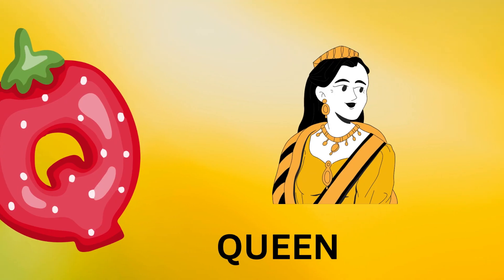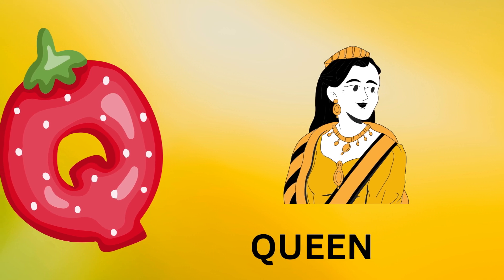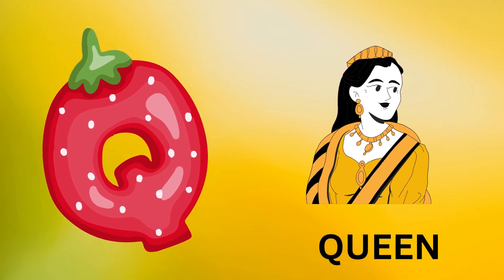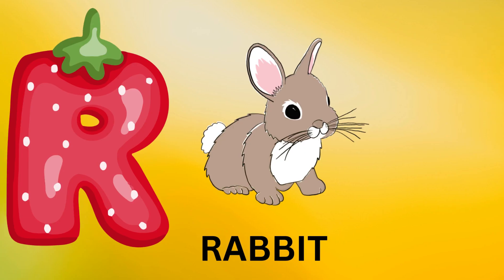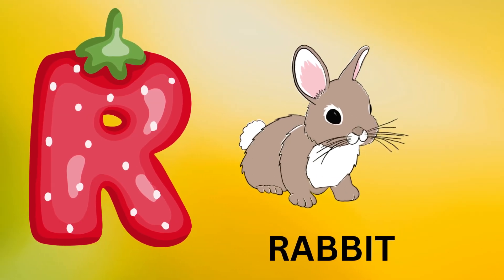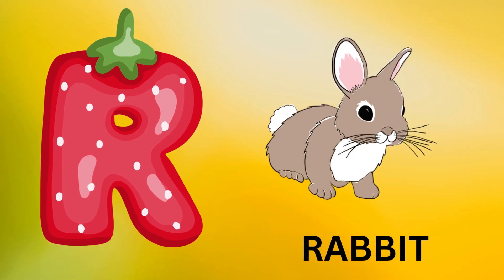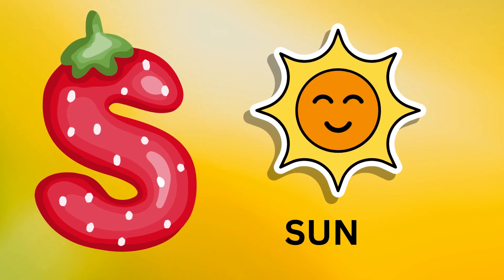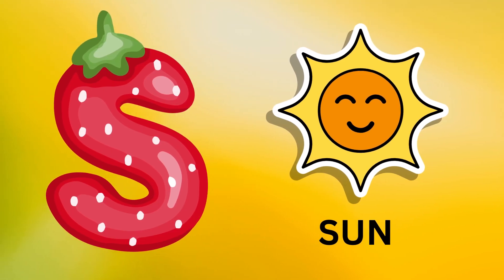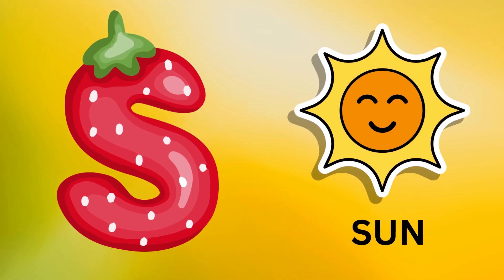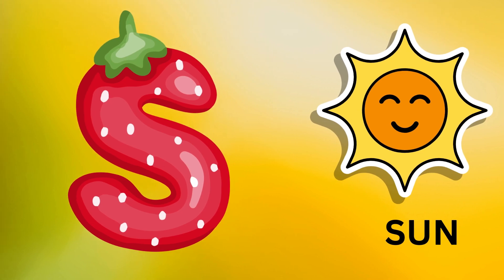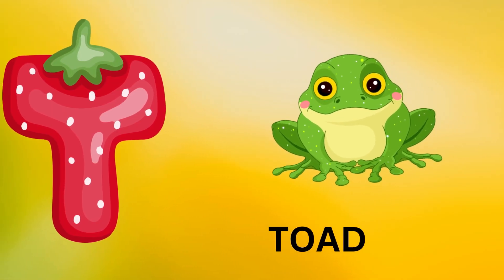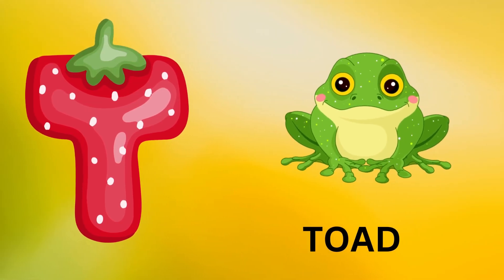Q is for queen, k-k-queen. R is for rabbit, r-r-rabbit. S is for sun, s-s-sun. T is for toad, t-t-toad.